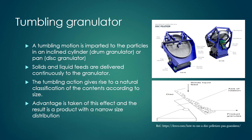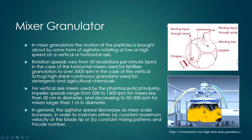A picture shows the tumbling granulator, which imparts motion to particles in an inclined cylinder — generally called drum granulators or pan granulators, sometimes disc granulators. Solids and liquids are fed continuously, and tumbling action gives rise to rotational movement of solid particles. During tumbling action, there is natural classification of contents according to size, which is advantageous — granule formation and separation happen in parallel, giving a narrow size distribution of the product.